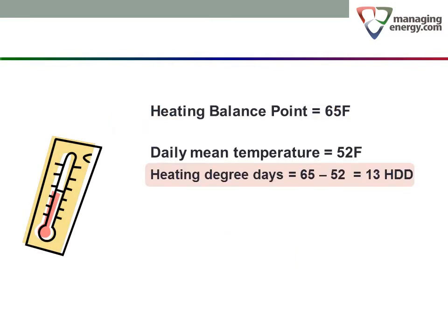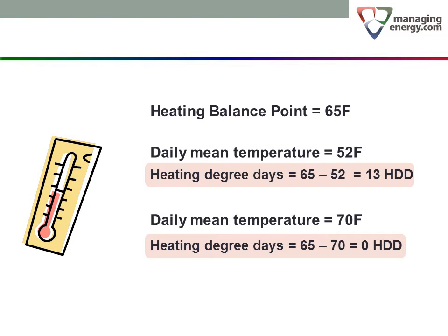Heating degree days are units of outdoor air temperature over time used as a measure of heating load. The HDD value for a single 24-hour day is the difference between the daily mean temperature and the heating balance point when the outdoor temperature is below the balance point. When the daily mean temperature is above the heating balance point, there is no heating load, so the HDD value is zero. The HDD value for any period is the sum of the heating degree days for all the days in the period. In this example, the heating balance point is 65 degrees Fahrenheit. A day with a daily mean temperature of 52 degrees Fahrenheit would yield 13 heating degree days. If the following day has a daily mean temperature of 70 degrees, the heating degree days would be zero. The cumulative heating load for the two days would be 13 heating degree days.